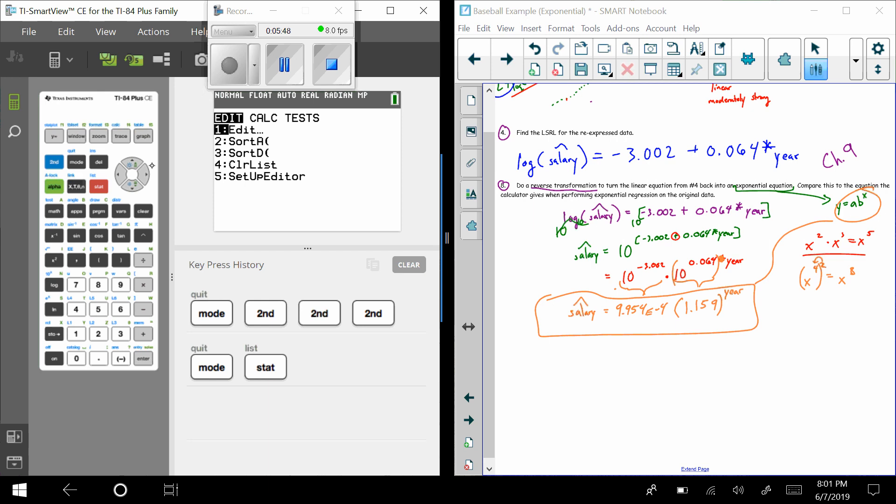We're going to go to Stat, we'll go over to Calc. We've done the linear regression before - maybe I don't want to do that. Instead maybe I will just look for something that looks like exponential. Look at this one right here: Exponential Regression. Hit that. Now here's the key: we had to do this log because that's how we got our equation. Look at our end equation - we have salary and just year. We don't have logs or anything in here. So I don't want this L4. I want my original L2.